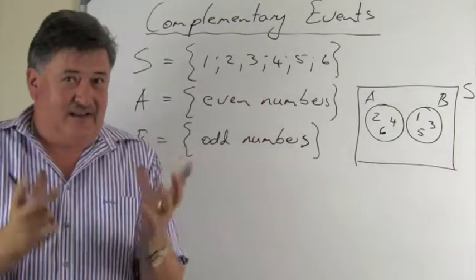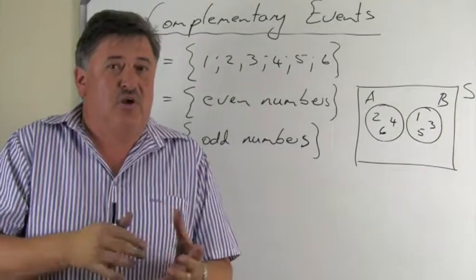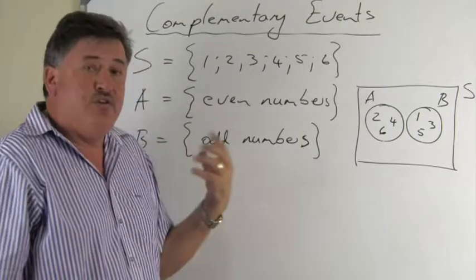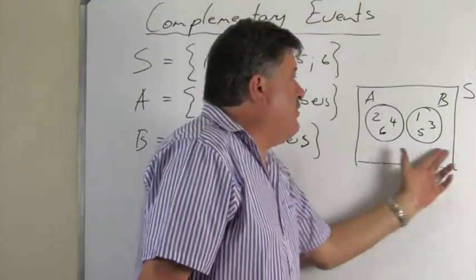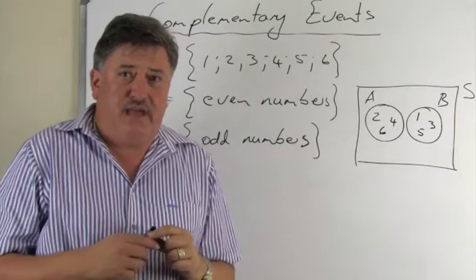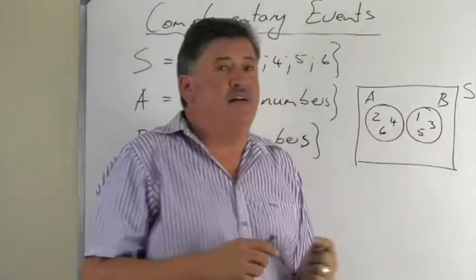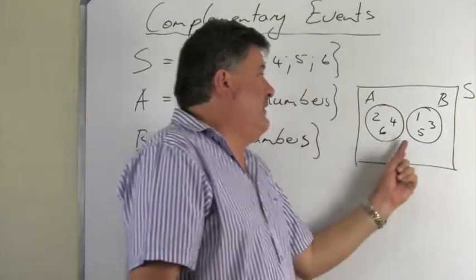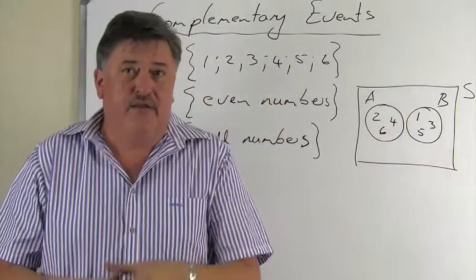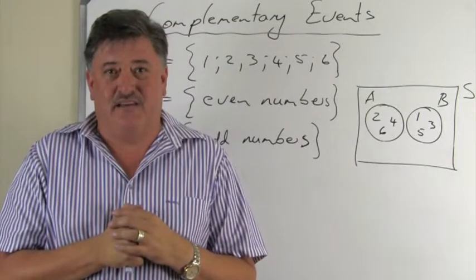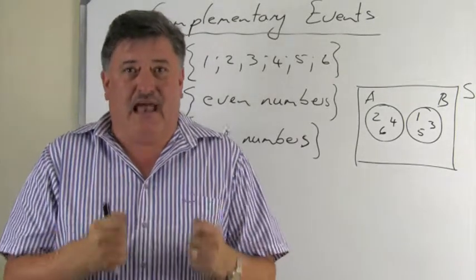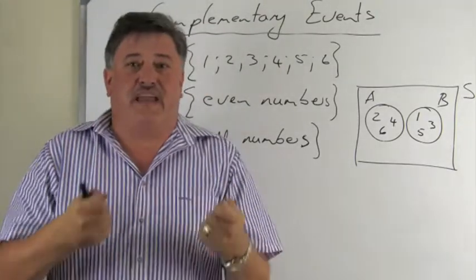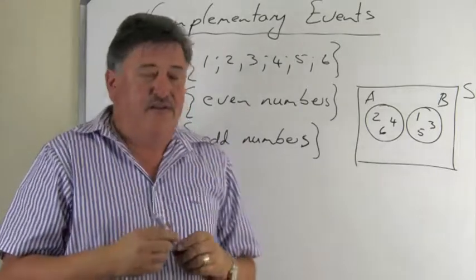These two events exhaust — to use the term we used earlier — or use all the outcomes. There are no outcomes outside these two events, which means they are exhaustive. And secondly, there is nothing in common between them, which means they are mutually exclusive.